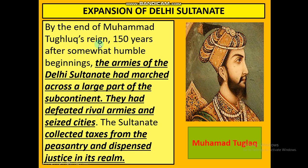By the end of Muhammad Tughlaq's reign — 150 years after somewhat humble beginnings — the army of the Delhi Sultanate had marched across a large part of the subcontinent. They defeated rival armies, seized cities, and the Sultanate collected tax from the peasantry. He also ensured that all people living under his territory were happy and received proper justice.